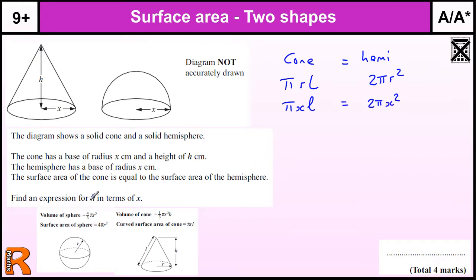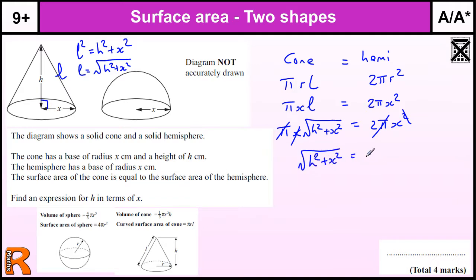So we have these two things. And we're trying to work out an expression for H in terms of X. Now H, if we have L here, this is a right-angled triangle. So Pythagoras tells us that L squared equals H squared plus X squared. So the L that we've got in here is equal to the square root of H squared plus X squared. So we can replace that in here with pi times X times the square root of H squared plus X squared. And that's equal to 2 pi X squared. Now I'm going to do a bit of cancelling. We can divide by pi on both sides. We can divide by one of the X's here and this X here. So we end up with square root of H squared plus X squared equals 2X.